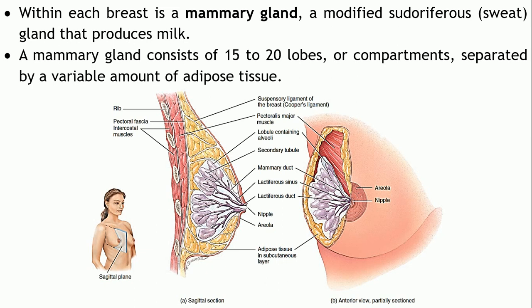Within each breast is located a mammary gland. The mammary gland is actually a modified sudoriferous gland — sudoriferous means sweat gland — so these are modified sweat glands that produce milk. A mammary gland comprises around 15 to 20 lobes, or compartments.